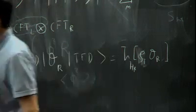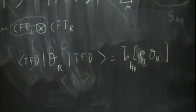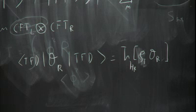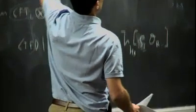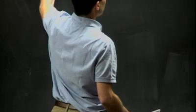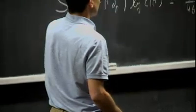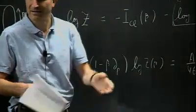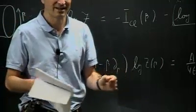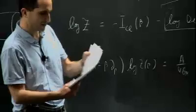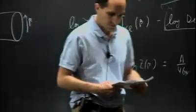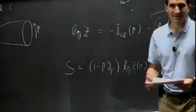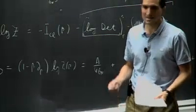The idea is that this geometry really corresponds to the Thermal Field Double state. This is because we obtained both the geometry and the boundary state by doing the Euclidean continuation and cutting the Euclidean diagram — both following the same construction in the boundary and the bulk. Therefore they have to be the same.